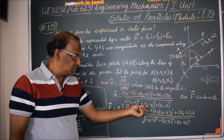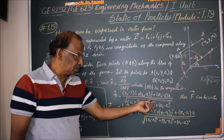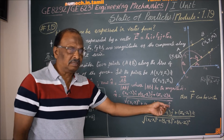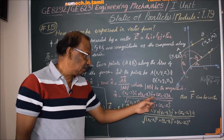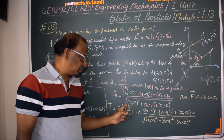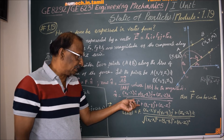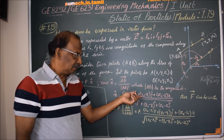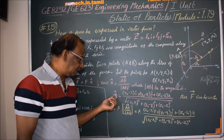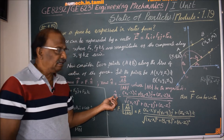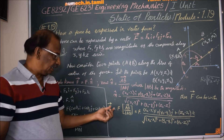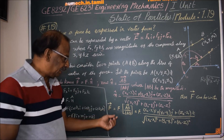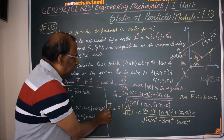The unit vector formula involves: the numerator is (x2−x1)·i + (y2−y1)·j + (z2−z1)·k, and the denominator is the square root of (x2−x1)² + (y2−y1)² + (z2−z1)². This gives the direction of the force.